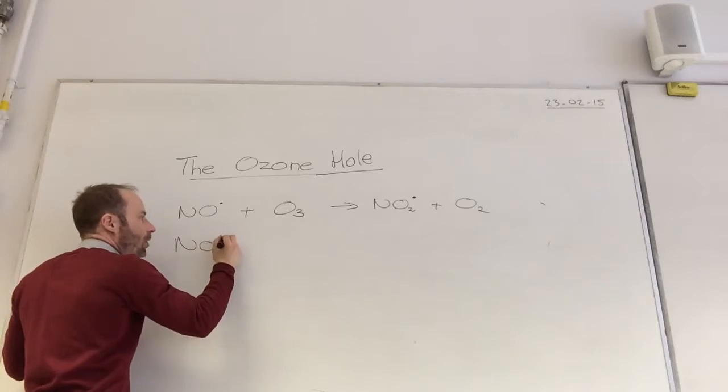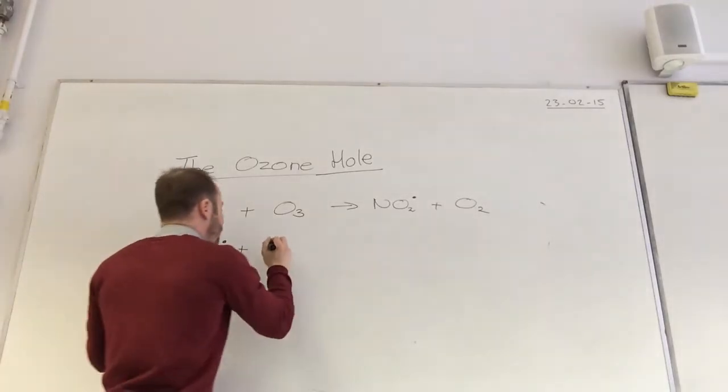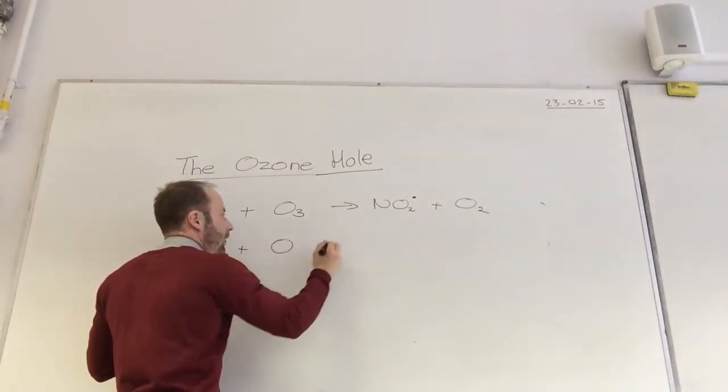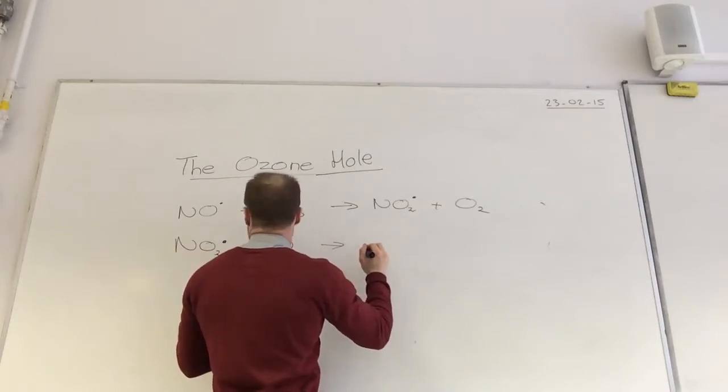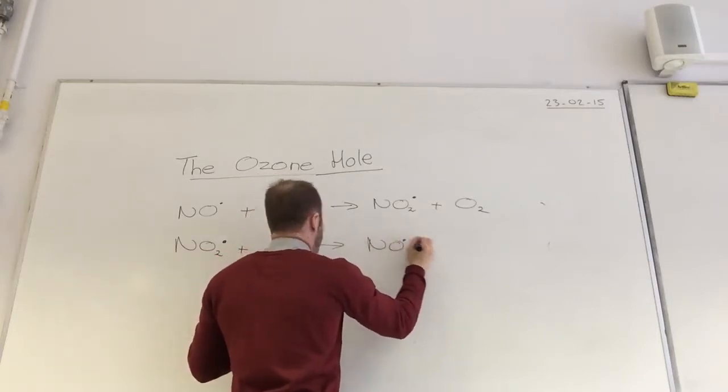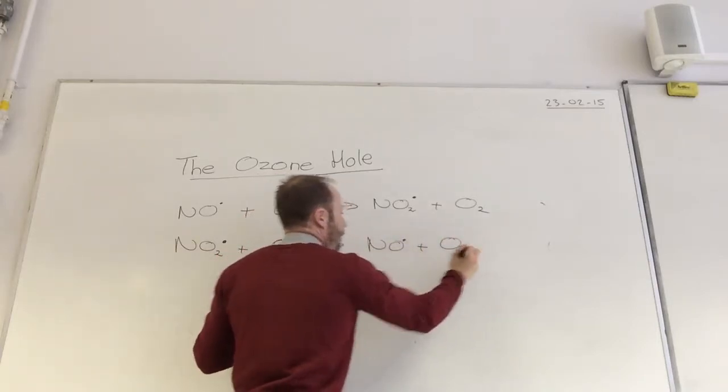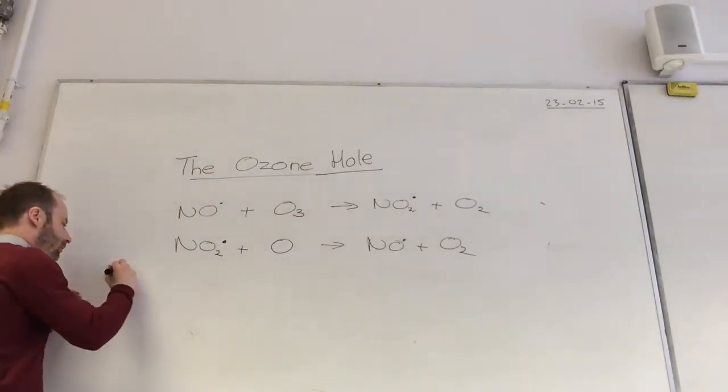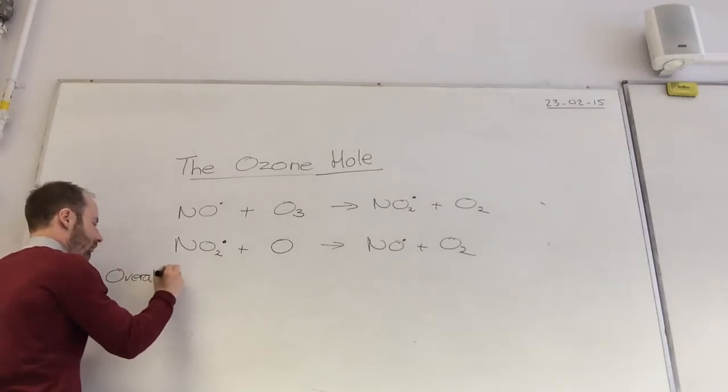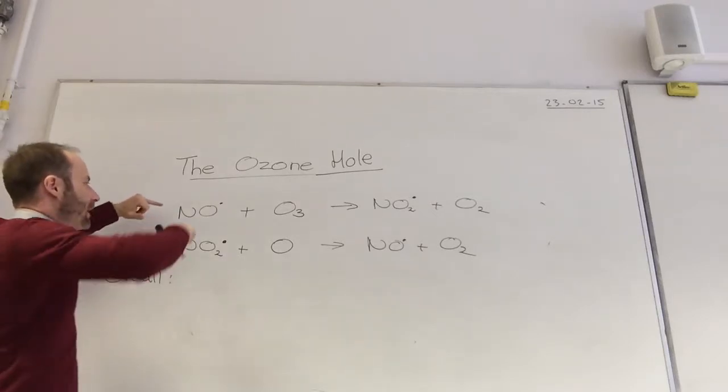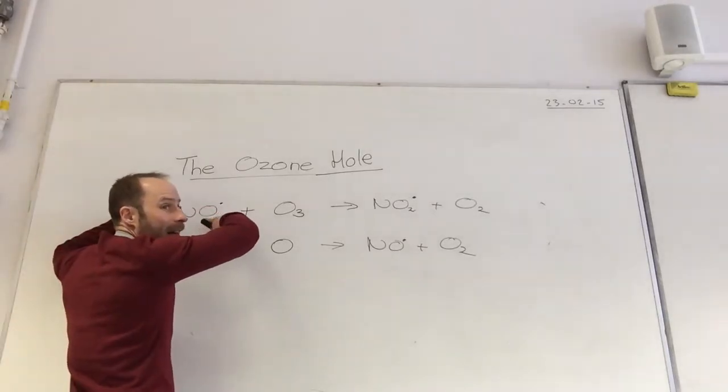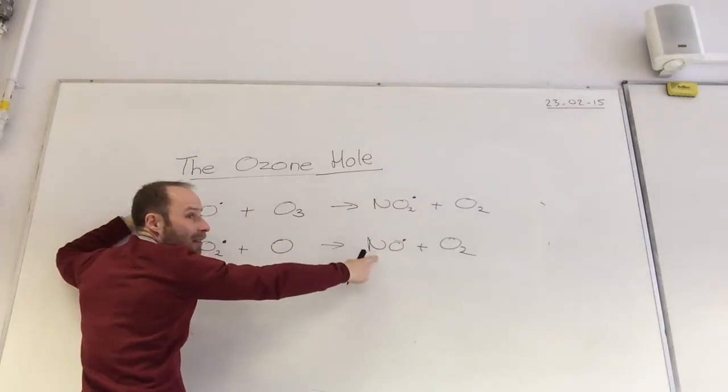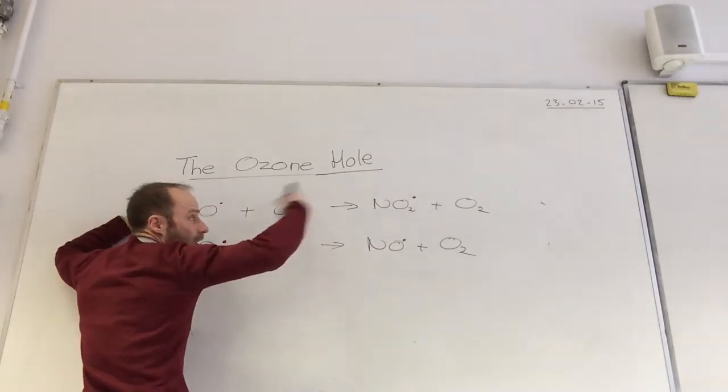NO2 dot comes along to meet O to give me NO dot plus O2. So again, the same thing happens overall. Can you see? I use it there, but I recreate there. So it is going to cycle through.